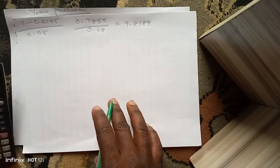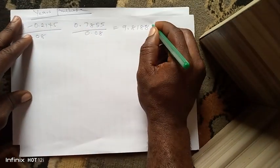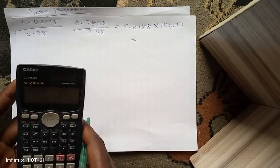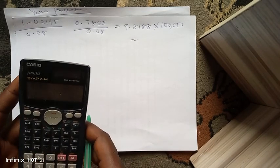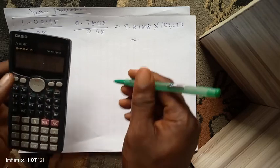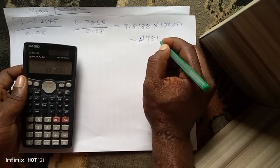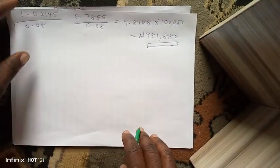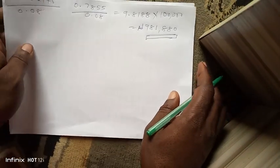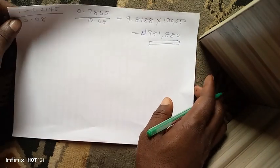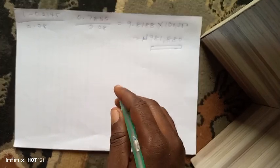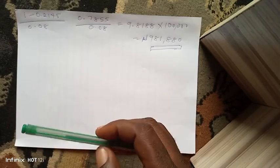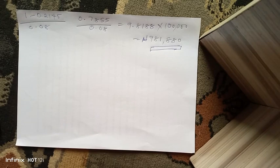We now multiply the YP factor by the annual sum: 9.8188 times 100,000 equals 981,880 naira. This is the capital value — the lump sum the landlord would receive at the end of 20 years. Thank you. If you have any questions about YP single rates, please drop them in the comment section. In our next video we shall be talking about YP dual rates.